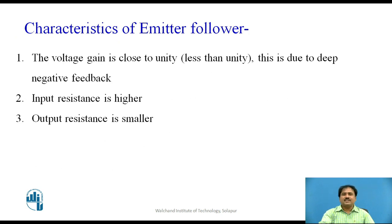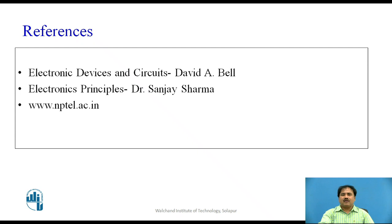Finally, these are some properties of the emitter-follower: the voltage gain is nearly close to unity, because of the negative feedback offered by RE — it is normally called a deep negative feedback, since 100% of the voltage is fed back to the input, making the output nearly the same as the input. The second benefit is that the input impedance is very high, and finally, the output impedance is very small. These final two properties are very important. I hope you understand the different parameters discussed in the video.